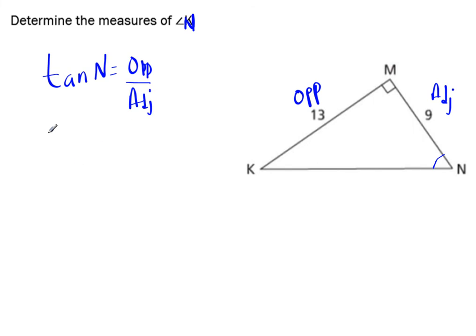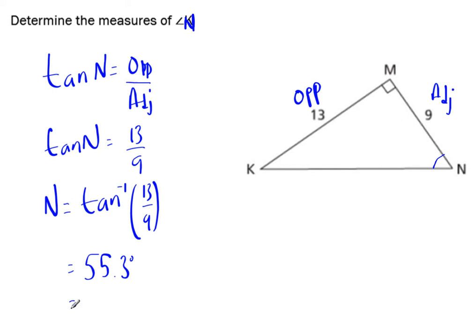So we start, tan of N is equal to opposite over adjacent. And that means that tan of N is equal to 13 over 9. And then we can go N is equal to tan negative 1 of that ratio. So as soon as you find your ratio, you can rewrite it. And that gives us tan negative 1, second function tan, 13 divided by 9.